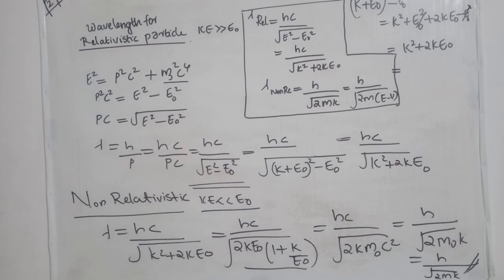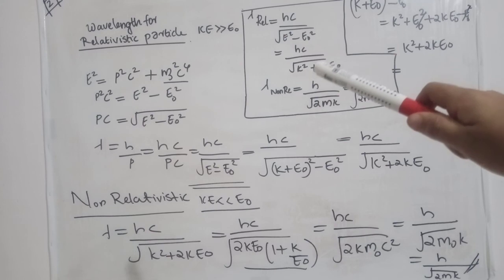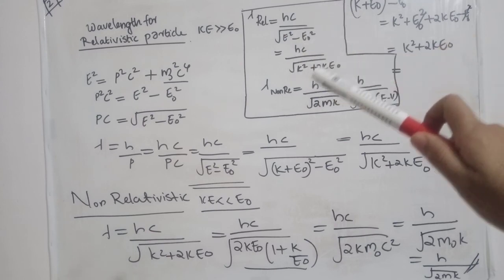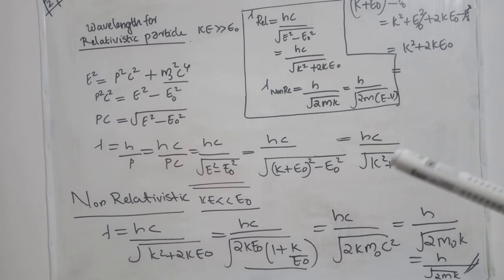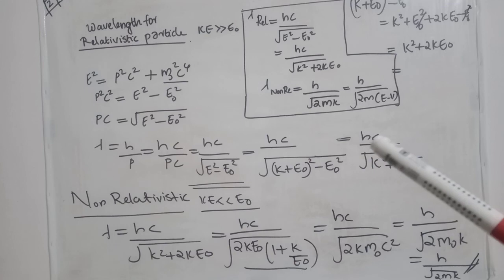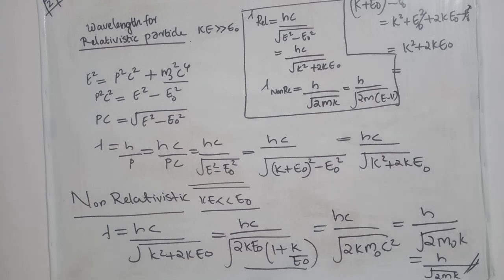To summarize the wavelength expressions: for a relativistic particle, lambda = Hc / √(E² - E₀²), or equivalently Hc / √(K² + 2KE₀). For a non-relativistic particle, lambda = H / √(2MK), which can also be written as H / √(2M(E - V)), since kinetic energy equals total energy minus potential energy. This completes the discussion of wavelength for relativistic and non-relativistic particles.